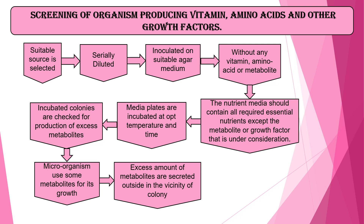Microorganisms use some metabolites for their own growth, and excess amounts of metabolites are secreted outside in the vicinity of the colony. The medium fulfills all growth requirements except the metabolites under consideration. After incubation at optimum temperature, the colonies are checked for metabolite production — if produced, the organism uses some for its own growth and secretes the excess amount outside in the vicinity of the colony.